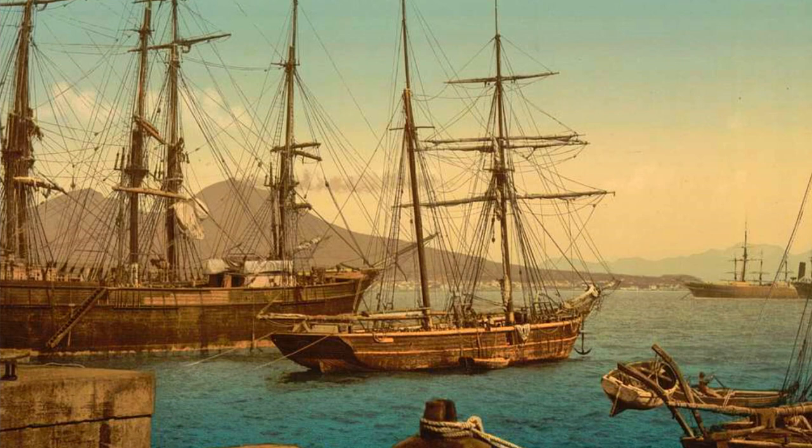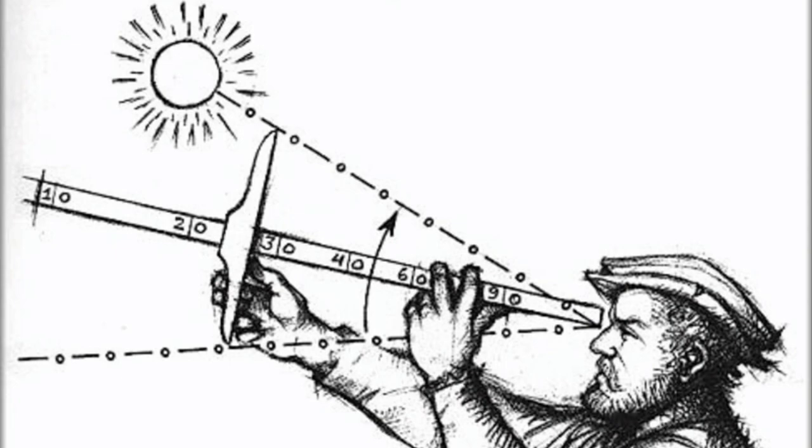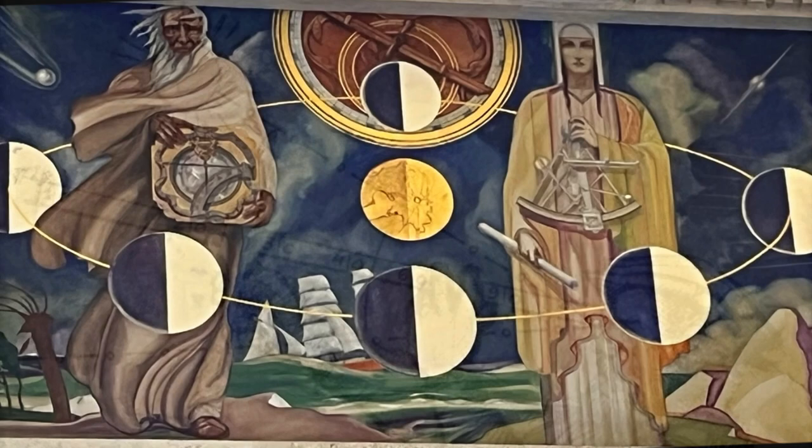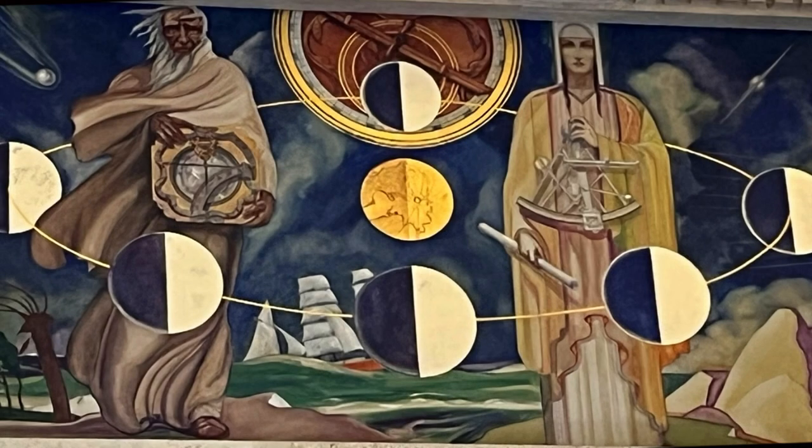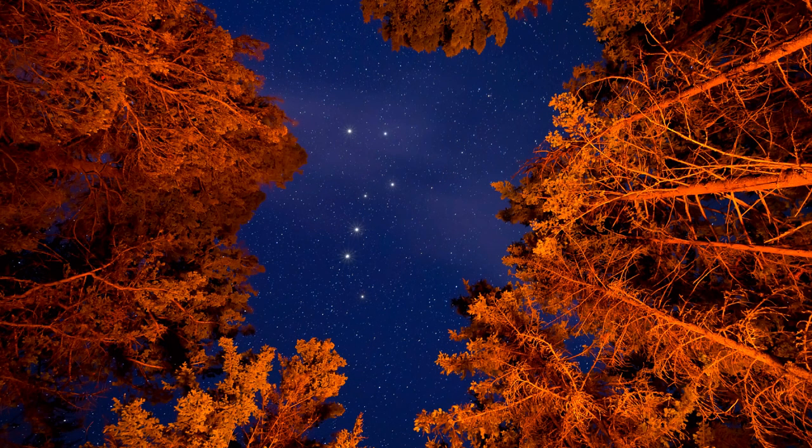European sailors needed a celestial compass on the open ocean. They turned to Polaris, the North Star. By measuring its height above the horizon with a cross staff, they determined their latitude. Griffith Observatory's Belen Navigation Mural captures this history.